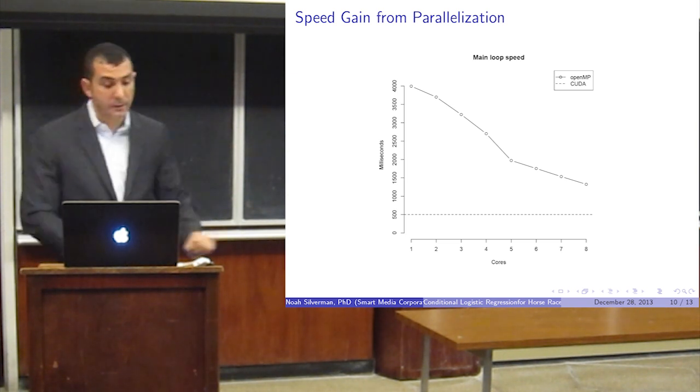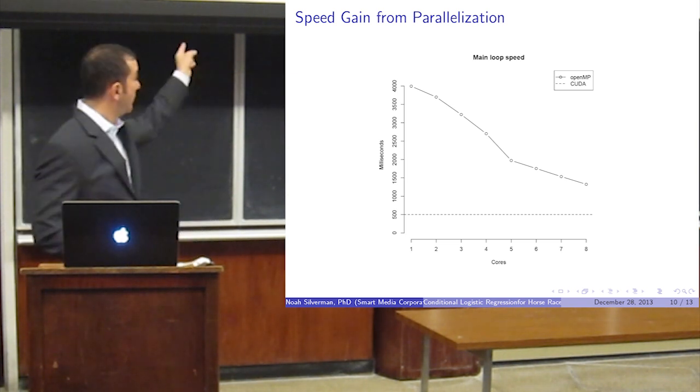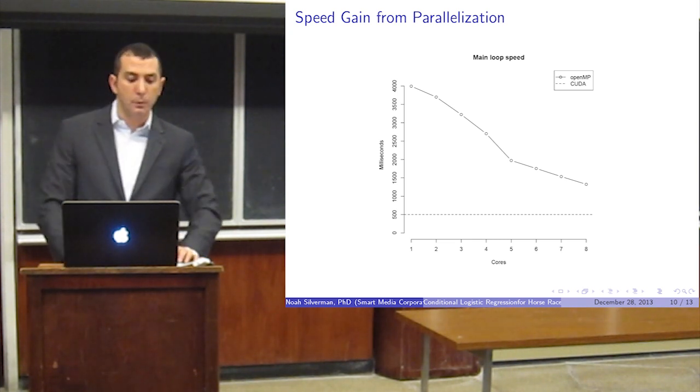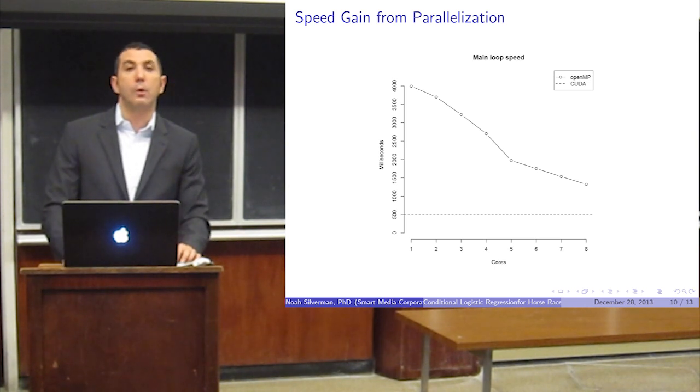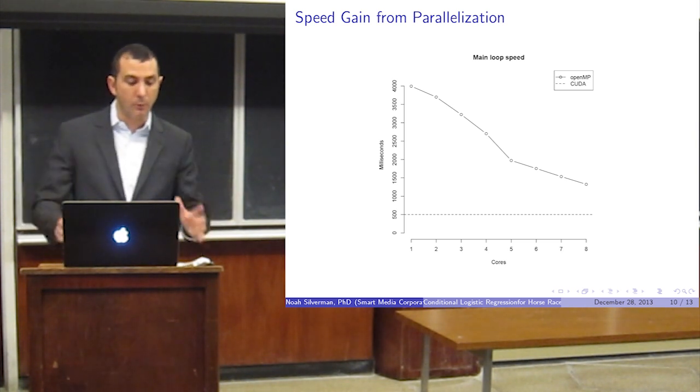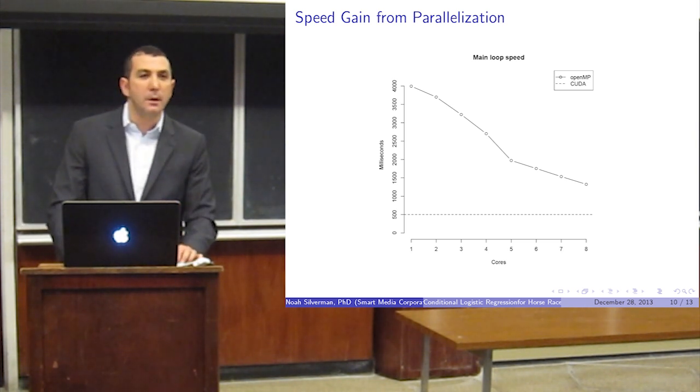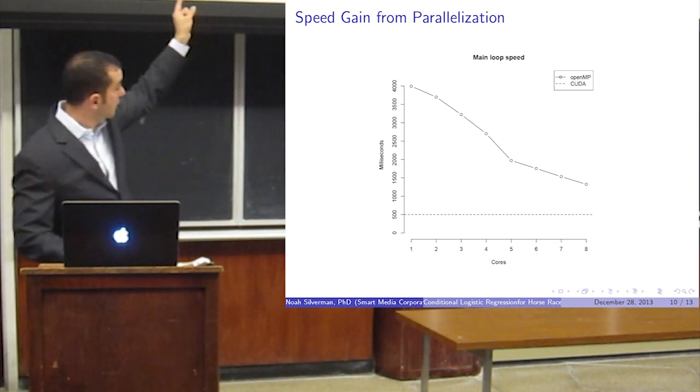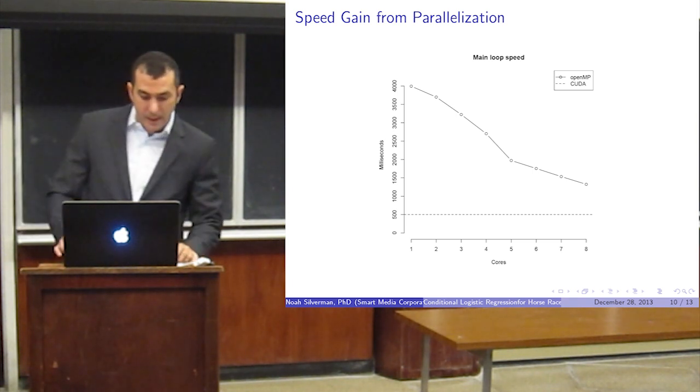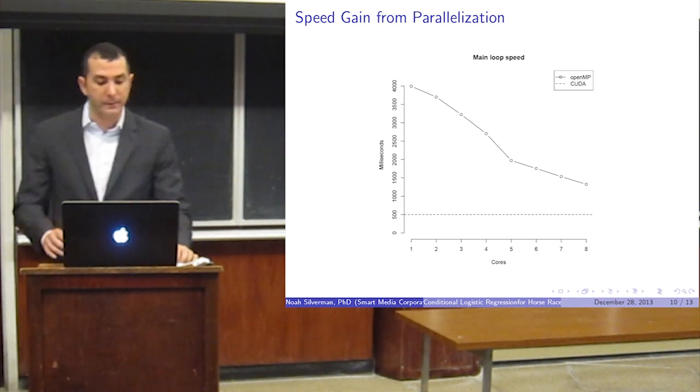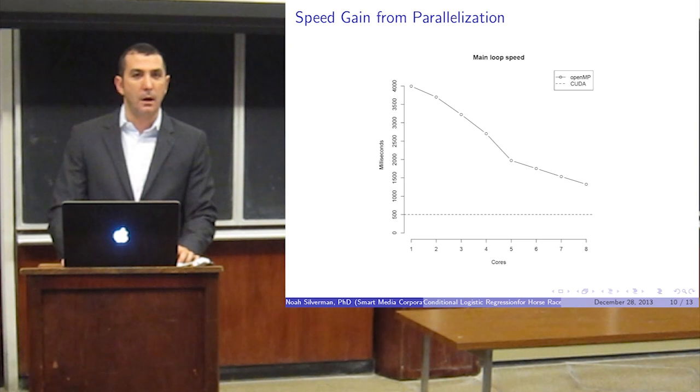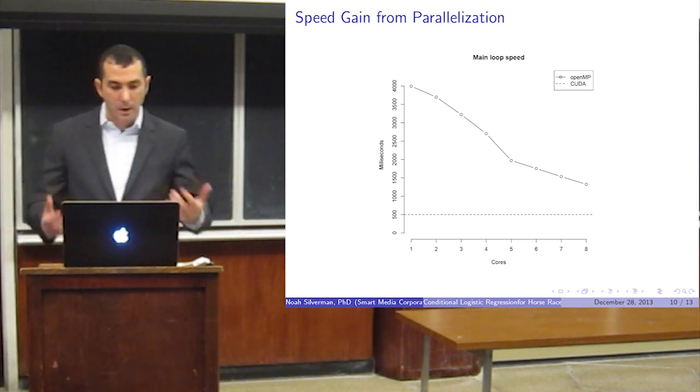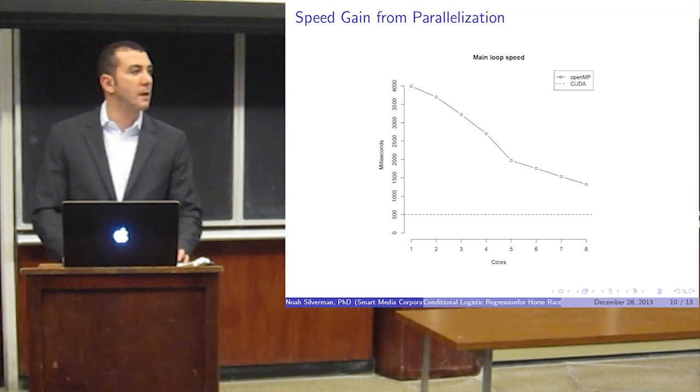Here's a quick plot. And you can see the dash line at the bottom is the speed for CUDA for the loop, 500 milliseconds. Running this on one core on my PC, which would be the normal way, is 4,000 milliseconds. So there's an eight times speed up using CUDA. And you can see the dash line as I go down OpenMP, running eight cores, I'm running in about 1,500 milliseconds, which is three times slower than CUDA, but it's not bad. But that also cripples my computer and I can't do anything else. So it is worth parallelizing for these kinds of problems.